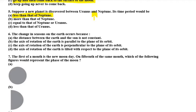Question number 6 is: the change in seasons on the earth occurs because the distance between the earth and sun is constant, the axis of rotation of the earth is parallel to the plane of its orbit, the axis of rotation of the earth is perpendicular to the plane of its orbit, or the axis of rotation of the earth is tilted with respect to the plane of its orbit. So actually the right option is D.